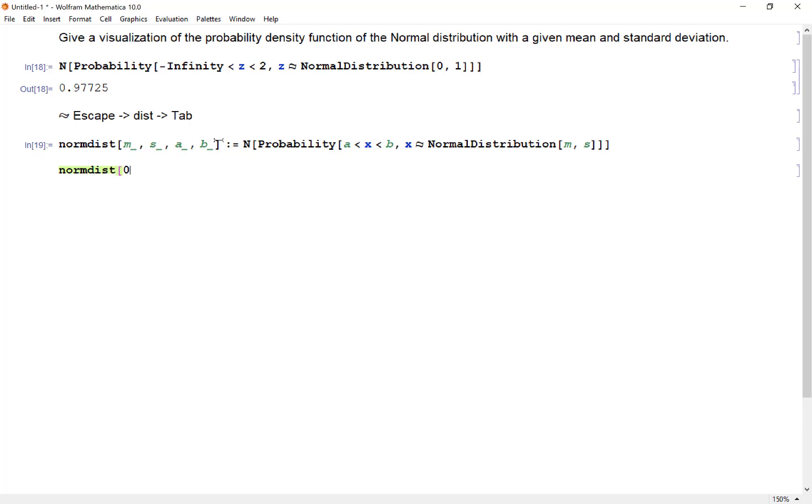If I want to say normdist(0,1,0,1.73), this would be the probability of going from 0 to 1.73 of the standard normal curve with a mean of 0 and a standard deviation of 1. All right, so there it is. Now I could easily calculate probabilities like this so I don't need the table anymore, but I want a visualization of this.